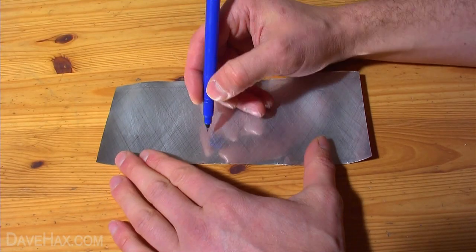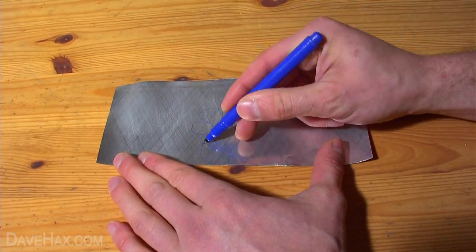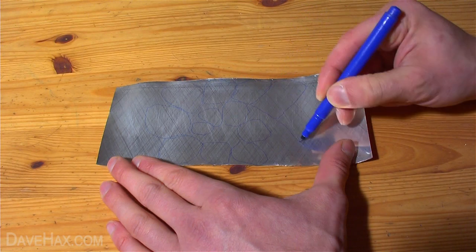Then, using a marker pen, we're going to draw out the petals in a spiral pattern. It doesn't have to be exact and it should look something like this.